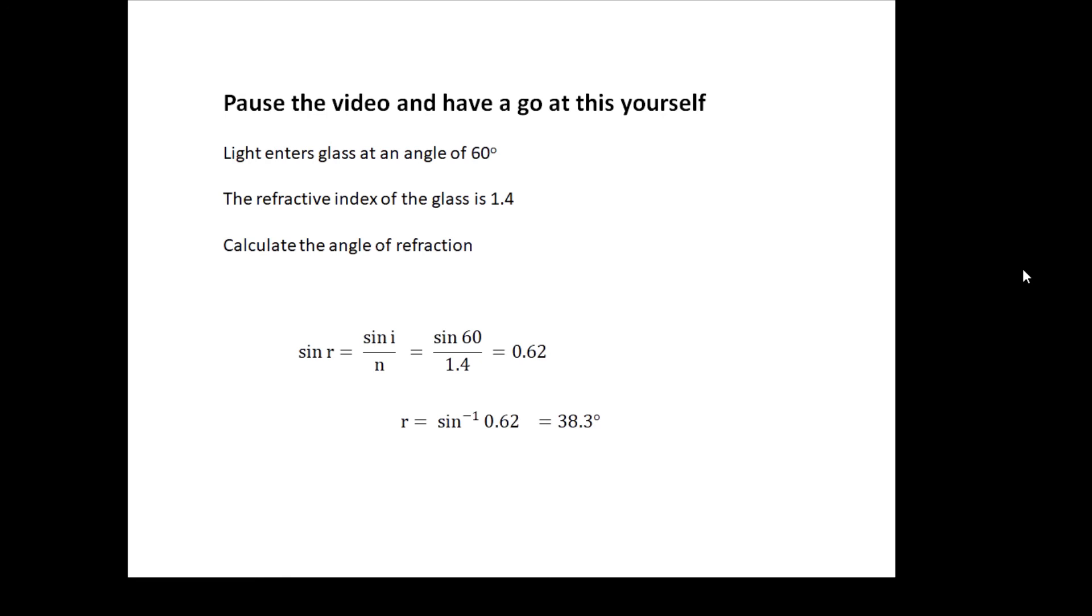Okay, now to work out r, before we work out r, work out sin r using the triangle. Sin r is sin i over n, so sin 60 over 1.4 is 0.62, and then r is going to be sin^-1 of 0.62, or shift sine of 0.62, which is 38.3 degrees.